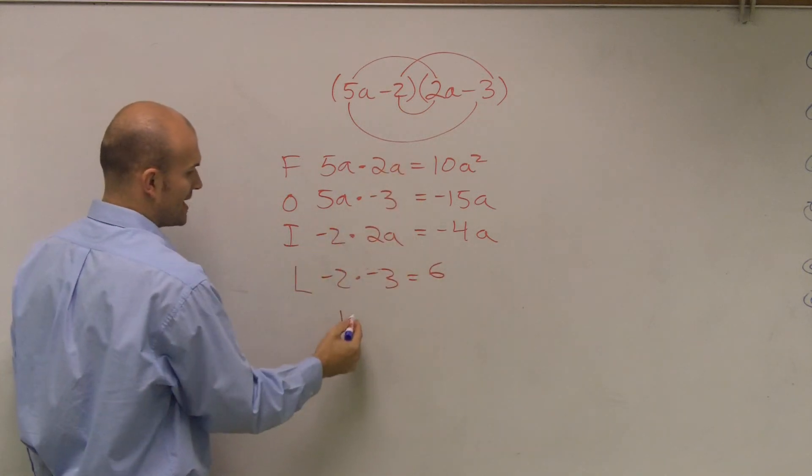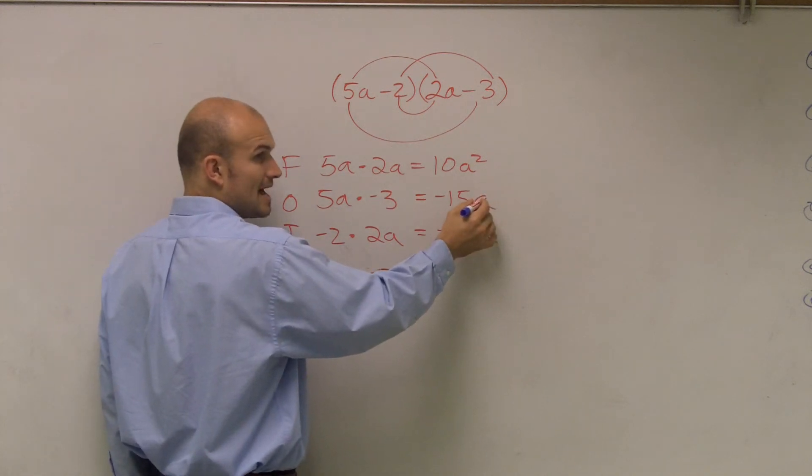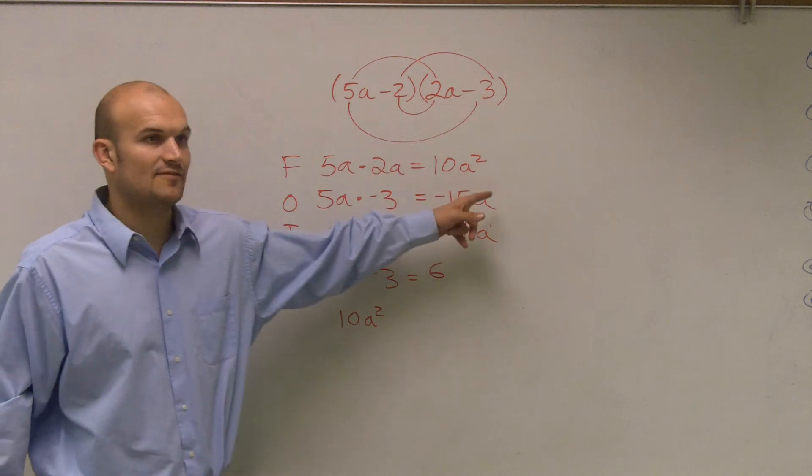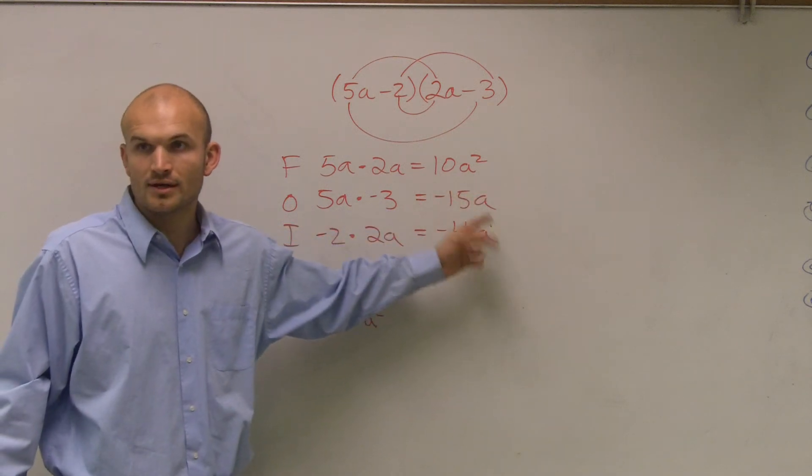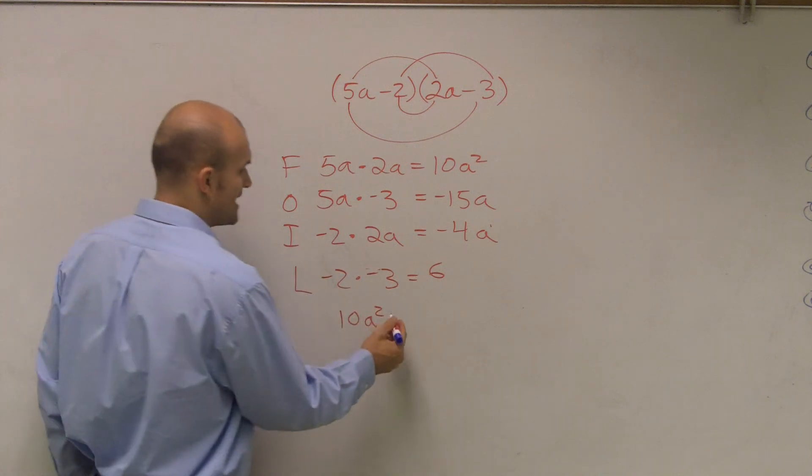Now I just write out all my answers, 10a squared. Notice that these both have the same base and the same exponent, so I can combine them. Negative 15 and a negative 4, negative 15 minus 4 is going to give you negative 19a.